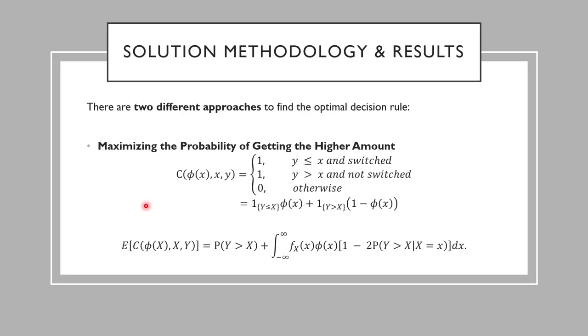We have two different approaches to find the optimal decision rule. In the first approach, we focus on maximizing the probability of getting the higher amount written inside the two envelopes. First, we define a cost function which penalizes the player if he or she ends up with the lower amount.